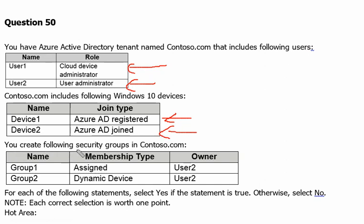You create the following security groups in contoso.com. Group one has a membership type of Assigned and the owner is user two. Group two has a Dynamic Device membership type and the owner is also user two.